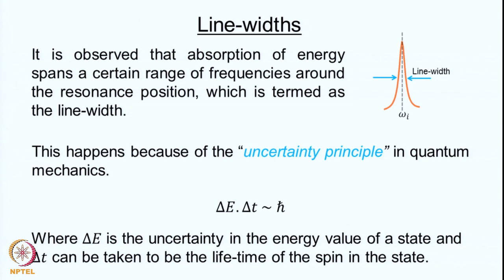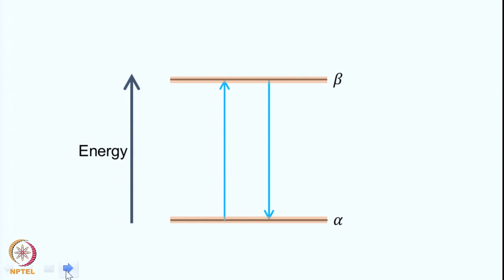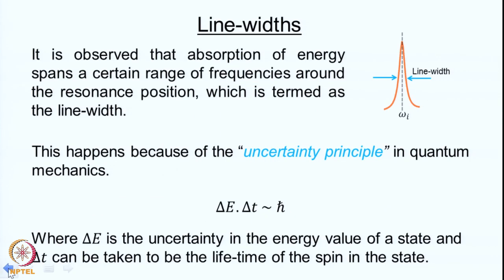Now, if absorption of energy happens, the energy should correspond to the actual value of the energy difference. If this energy difference is delta E, and if I call this equal to h times nu, where nu is the frequency of absorption, then nu has to equal delta E divided by h — a single frequency. However, it does not always happen that absorption of energy occurs at exactly one single frequency; it happens over a range of frequencies.